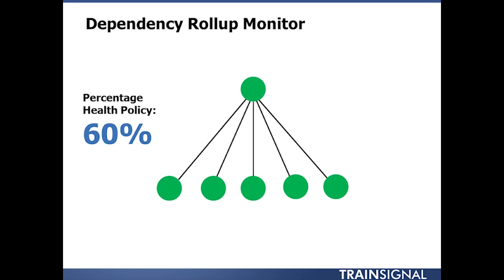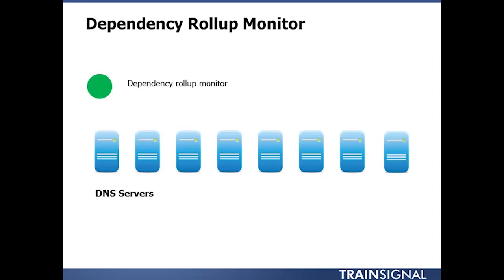This would mean that 60 percent of the monitored items would need to stay operational before the monitor goes red. In this example, the monitor would stay green even if two of the five items failed, but once that third item failed, the 60 percent availability threshold would be violated and the monitor would go red.